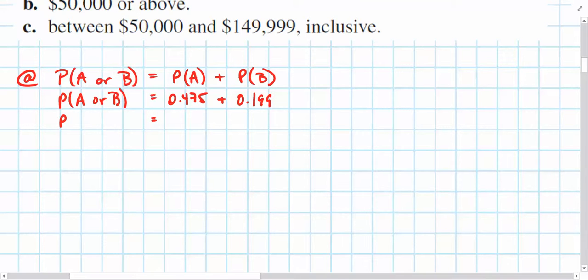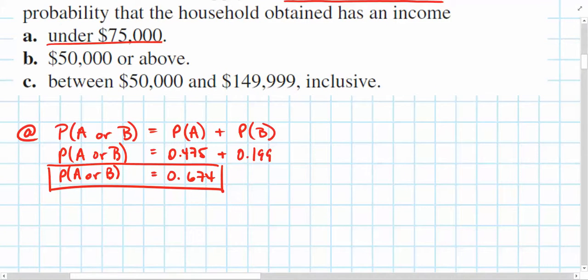And the sum of these two comes out to 0.674. We could check that with a calculator if we needed to. But the probability that someone earns, or I'm sorry, that a family earns under $75,000 is 0.674, or about 67%.